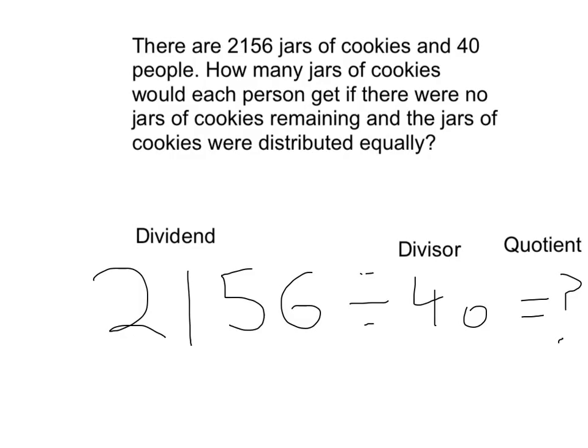There are 2,156 jars of cookies and 40 people. How many jars of cookies would each person get if there were no jars of cookies remaining and the jars of cookies were distributed equally?